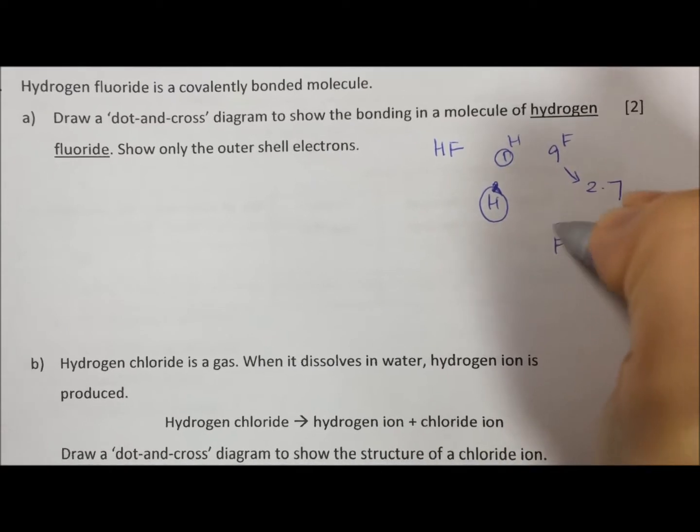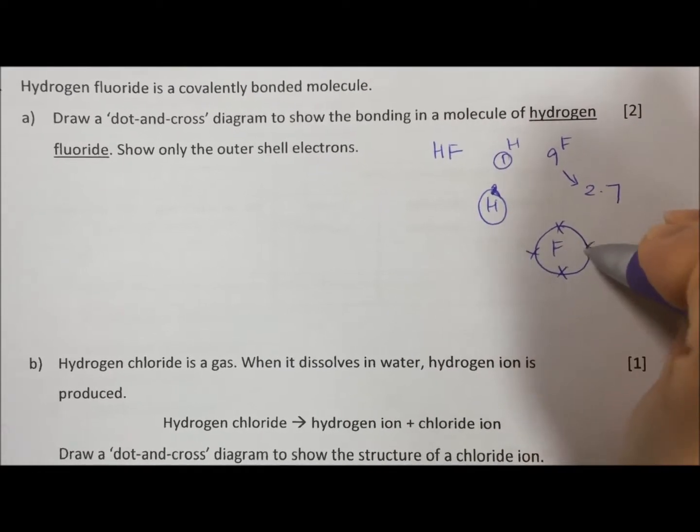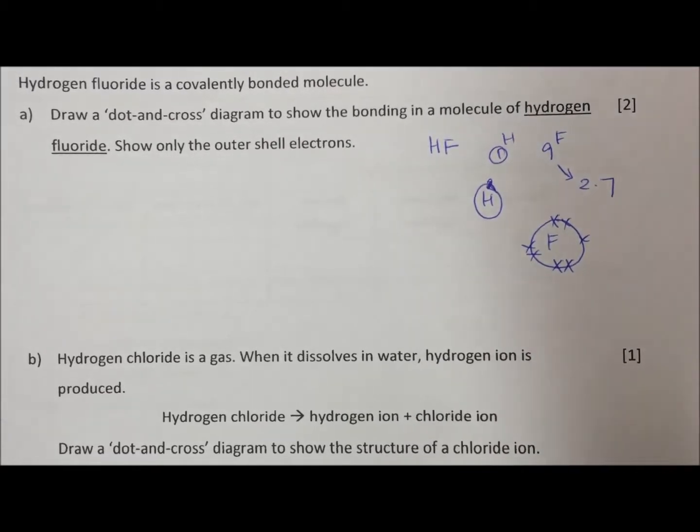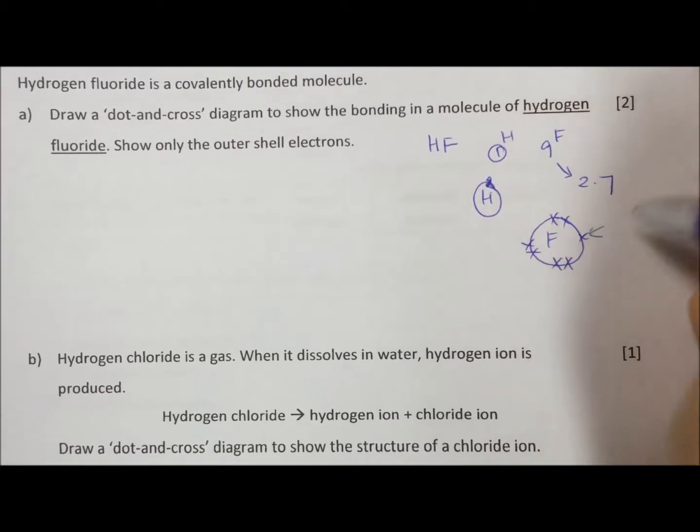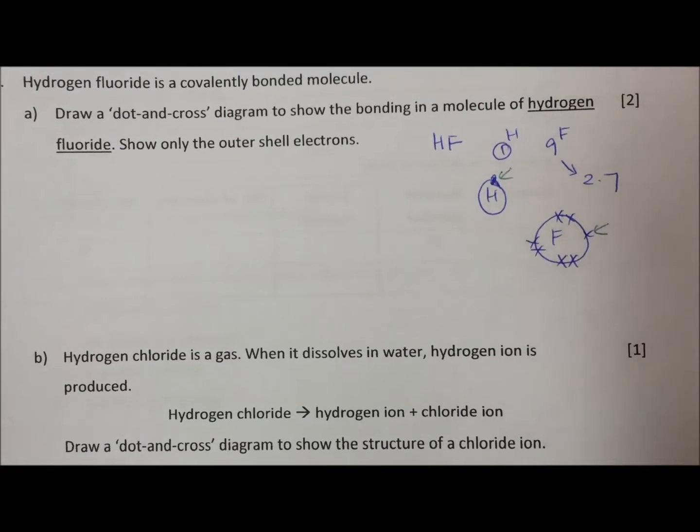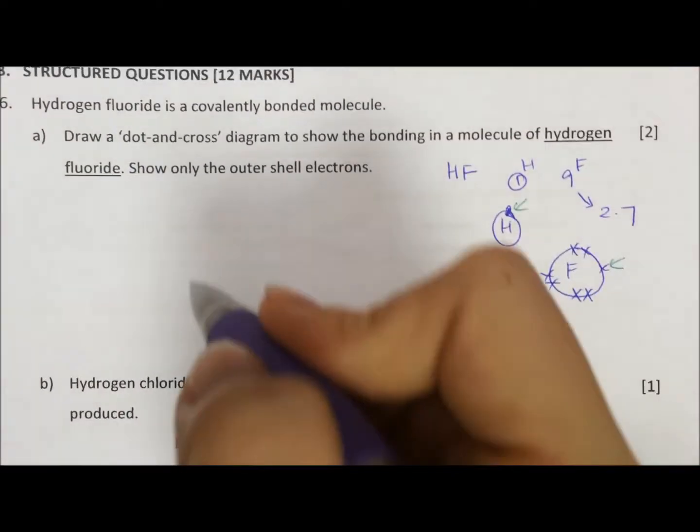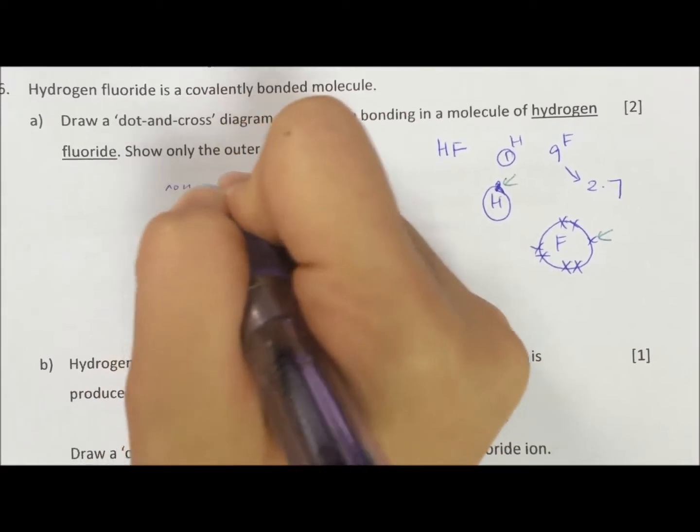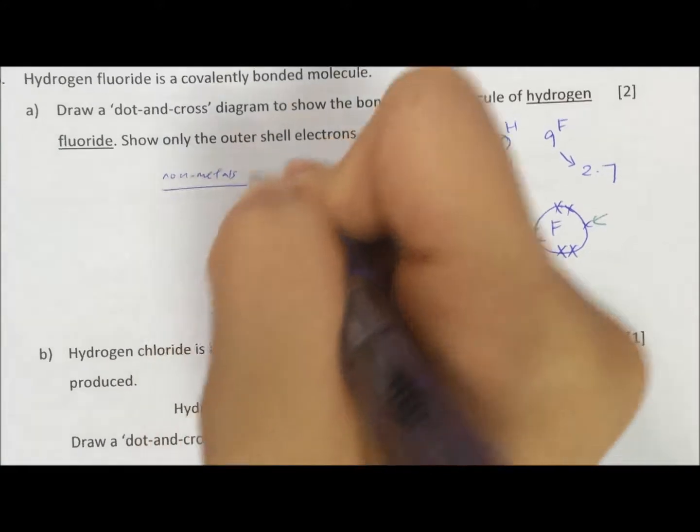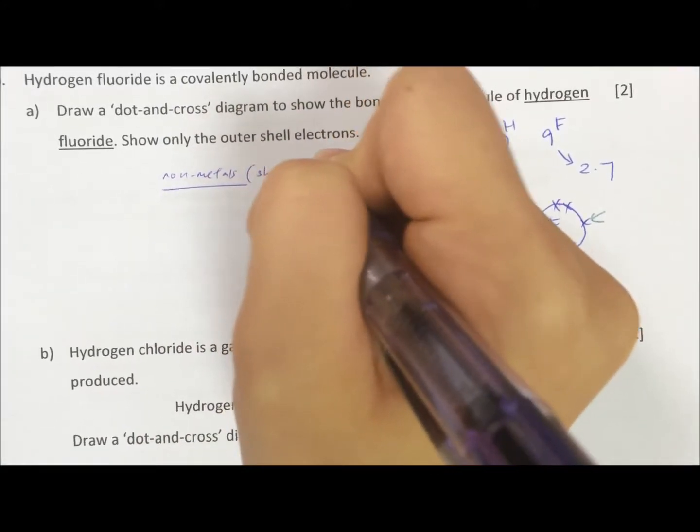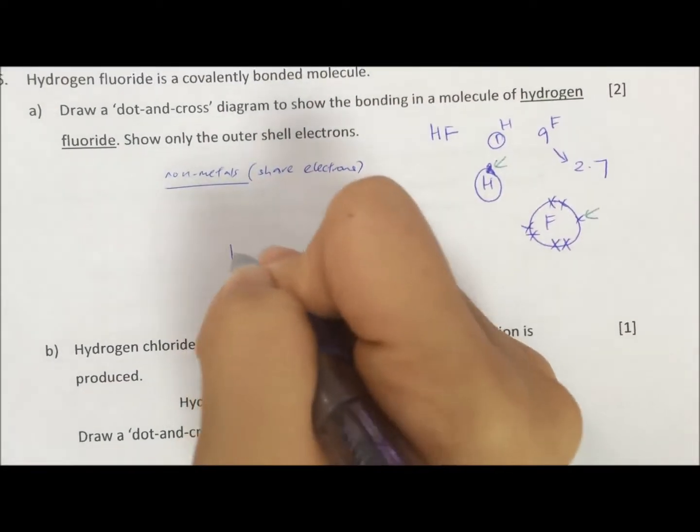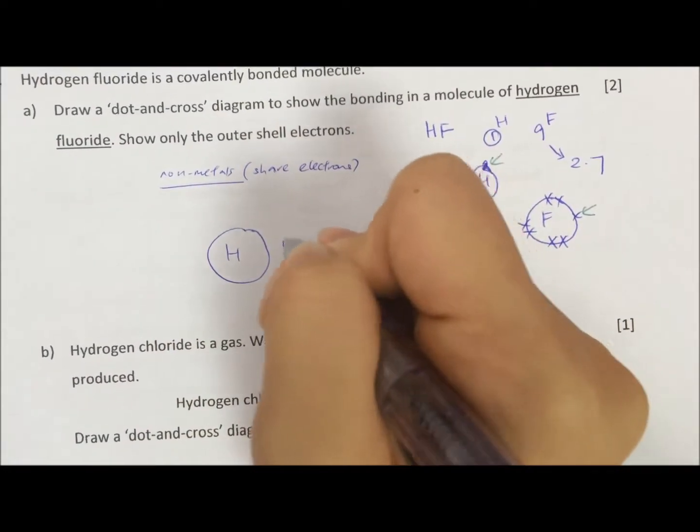So we must use crosses. One dot, one cross. So we only draw the valence shell, which is the seven electrons. So now if you see we have one lonely cross and one lonely dot. So that means we can simply draw one hydrogen atom and one fluorine atom. Hydrogen and fluorine both are non-metals. So if it is non-metals, you must draw sharing of electrons.